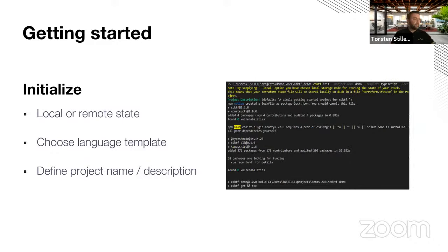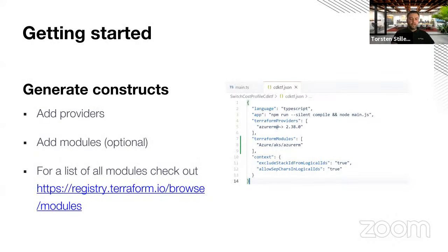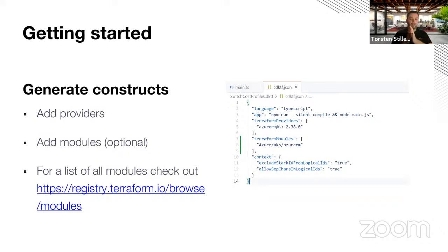The init call generates a couple of files — for example, main.py if you choose Python — and cdktf.json, which is the CDK configuration file where you now have to add things like the Terraform providers. Here we are using azurerm with the latest version. You can also use Terraform modules if you want — but modules are completely optional, no need to get started with modules.